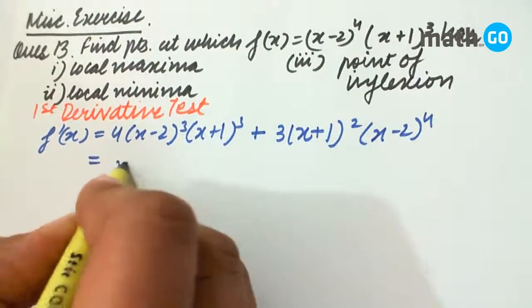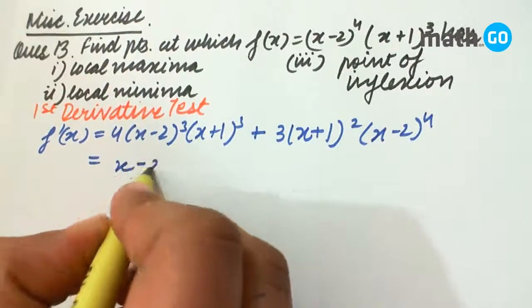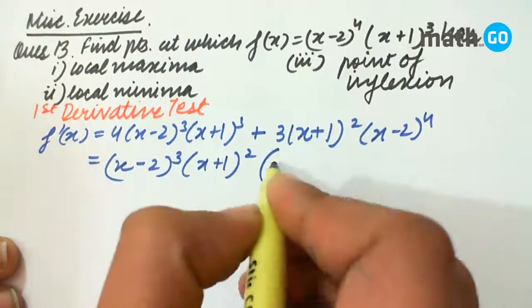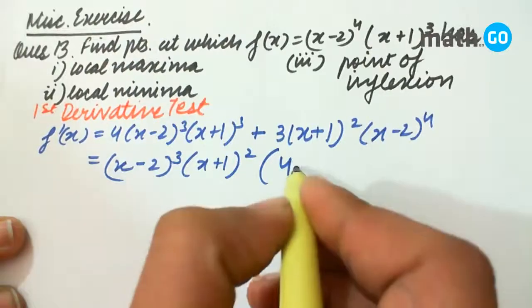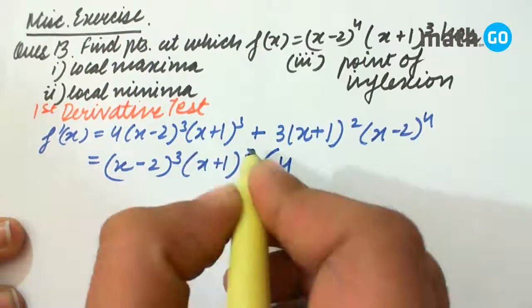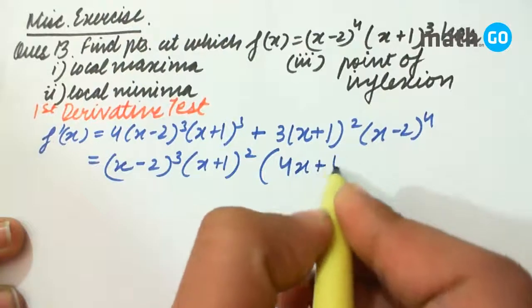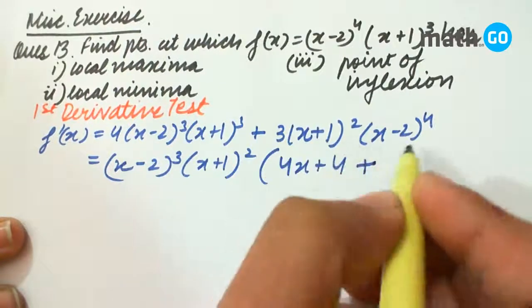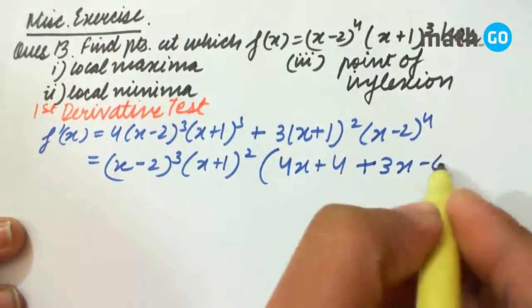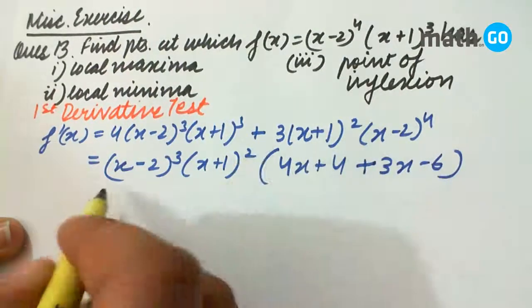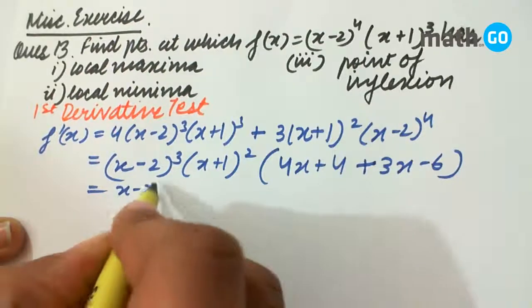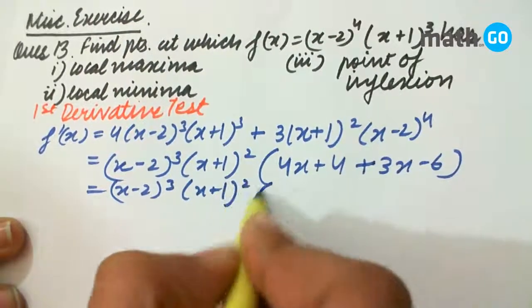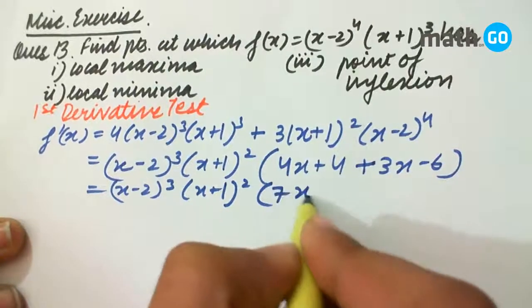So taking common some terms we will get (x+1)² and 4(x+1) so 4x+4 plus 3x-6. So we get (x-2)³(x+1)²(7x-2).